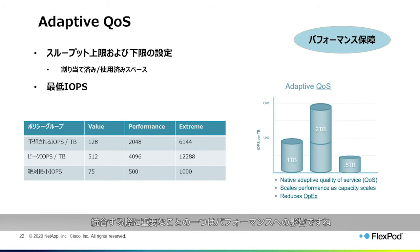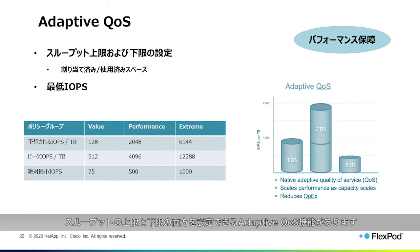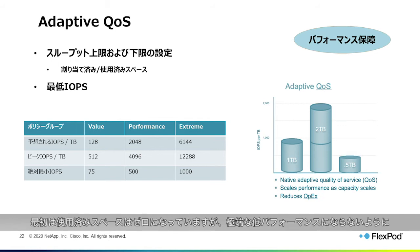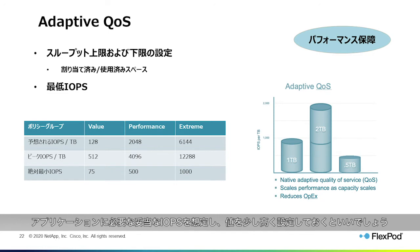One key consideration when consolidating is performance. With ONTAP, you have the adaptive QoS feature where you can set both upper and lower throughput limits based on allocated size or used space. In a desktop environment, as you expand the number of users, performance is guaranteed along with it. You can also set a minimum IOPS — particularly useful early on when used space is near zero — to ensure a reasonable performance floor for the application rather than a very low performance limit.